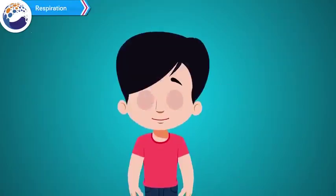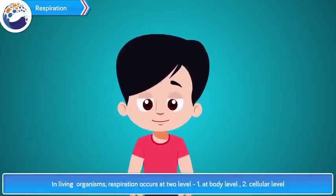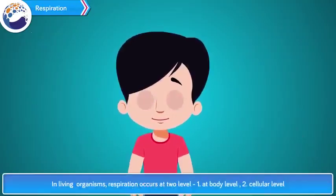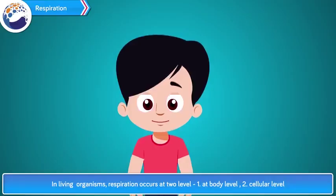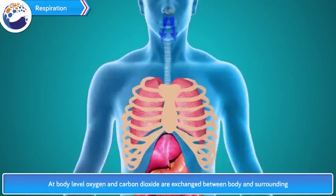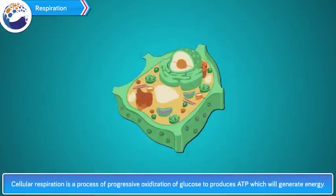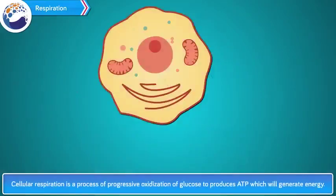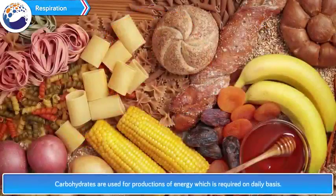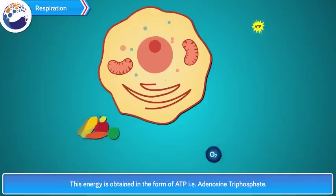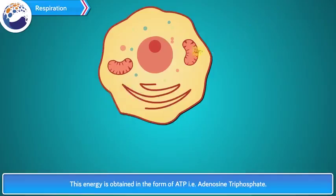Let us understand what respiration is. In living organisms, respiration occurs at two levels. At the body level, oxygen and carbon dioxide are exchanged between the body and the surroundings. At the cellular level, foodstuffs are oxidized either with or without oxygen. Carbohydrates are used for production of energy, which is obtained in the form of ATP, i.e., adenosine triphosphate.